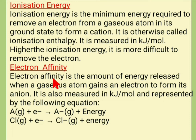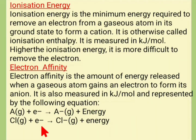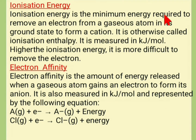The fourth periodic property is electron affinity. Electron affinity is the amount of energy released when a gaseous atom gains an electron to form an anion. It is measured in kJ per mole. Like ionization energy, electron affinity increases from left to right along the period and decreases moving down the group. Noble gases have no tendency to lose or gain electrons, so their electron affinity is zero.